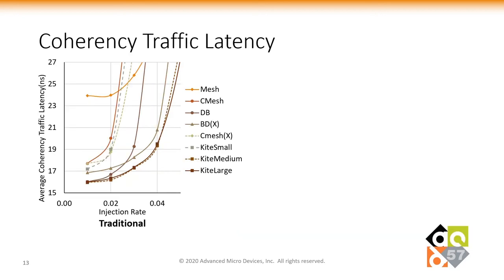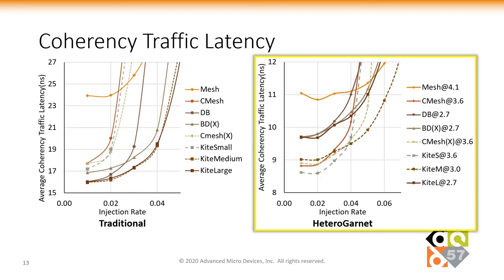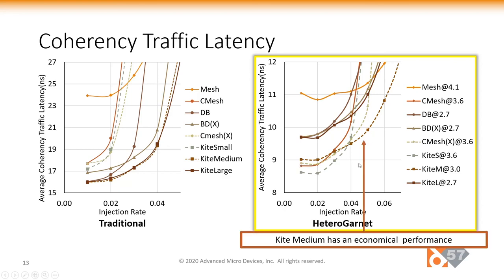A similar trend is observed with coherency traffic as well. Unlike observations with traditional network simulators, both CMesh and CMesh-X deliver better latency than Double Butterfly, Butter Donut, and Kite Large. Kite Small delivers the lowest zero-load latency, improving over Butter Donut by 11%, but fails to provide comparable throughput. Kite Medium offers an economical performance by improving both latency and maximum throughput. Although Kite Medium performed best in our evaluations, any of the Kite variants could be very effective depending on the design and technology constraints.